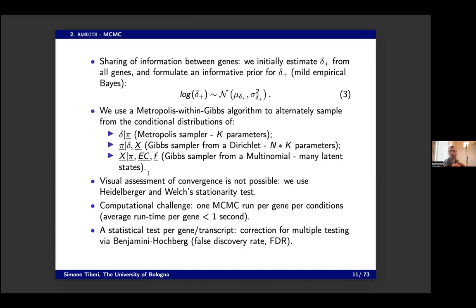Overall, it takes less than one second per gene, meaning one or two hours for a full data set on a laptop. Statistically, we do tests for every gene and every transcript — we have thousands of them, so we correct using Benjamini-Hochberg correction to ensure FDR is calibrated.